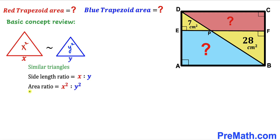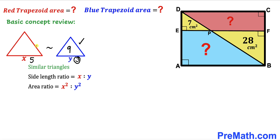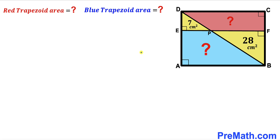For example, if the side length of the blue triangle is 3 and the side length of the red triangle is 5 units, then the area of the blue triangle is 3² = 9, and the area of the red triangle is 5² = 25.